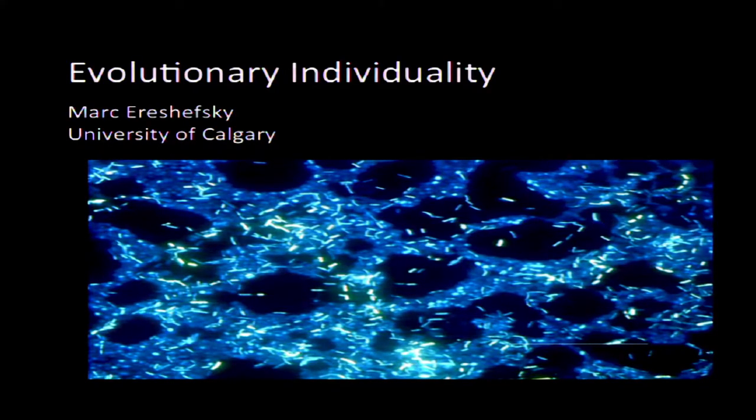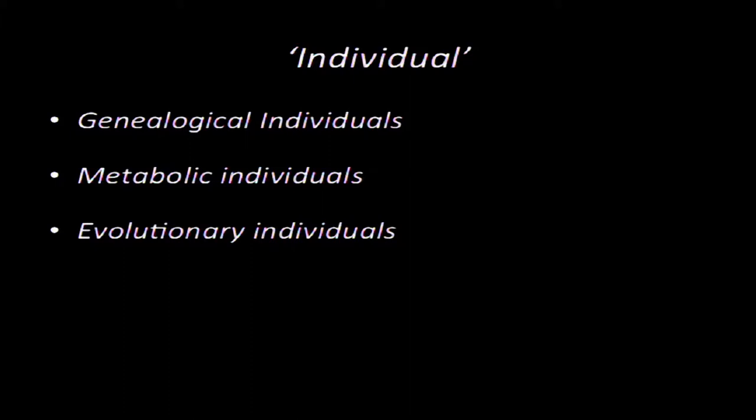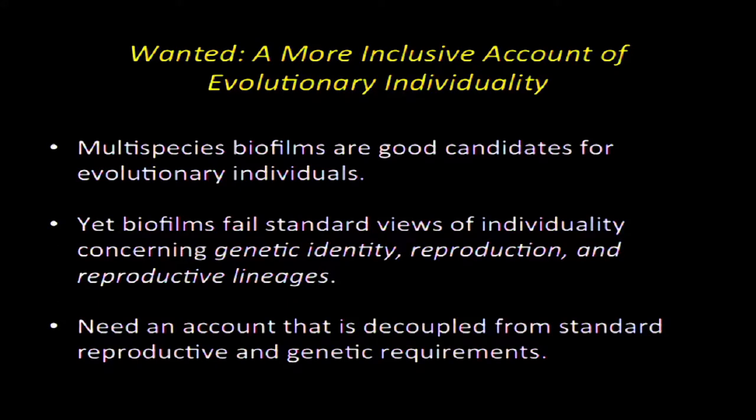So there's going to be a little bit of a shift here. I'm going to be talking about evolutionary individuality. The notion of an individual, both in and outside of biology, is ambiguous. In biology we might mean different things by an individual: we might mean a genealogical entity like a species or a genus or a family, or we might mean a metabolic individual — something that takes in resources from the environment and processes it to maintain its structure and integrity.